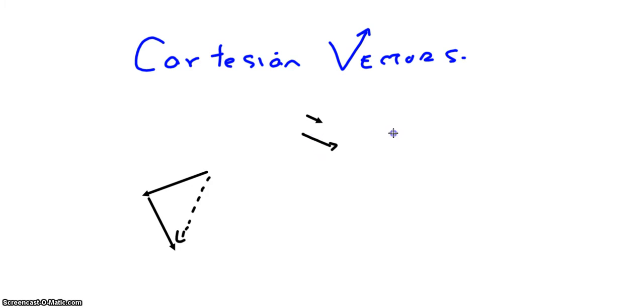So vectors can be represented as a picture form, but it also can be represented in a numerical form, which we call Cartesian vectors.